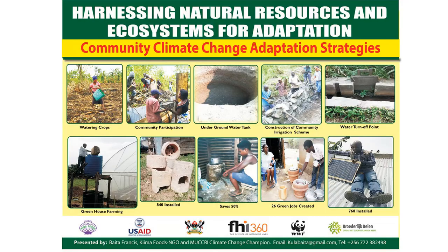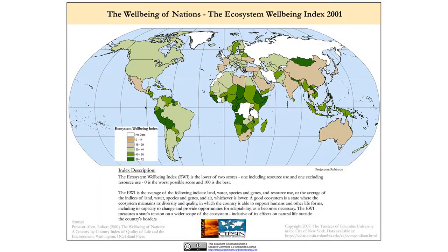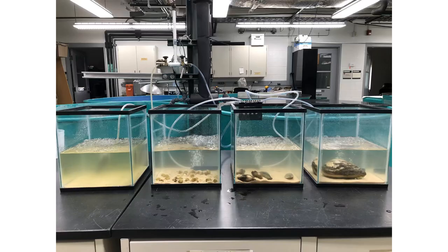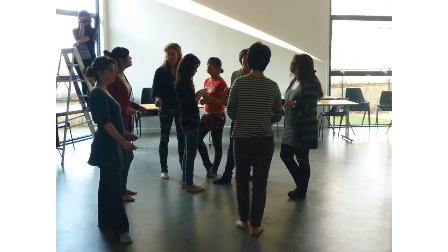In our next segment, we will explore the flow of energy and matter in ecosystems. In ecology, the flow of energy and matter is a fundamental concept that helps us understand how living organisms interact with each other and their environment. The video shows a diagram of the flow of energy and matter in an ecosystem, starting from the sun and ending with decomposers.